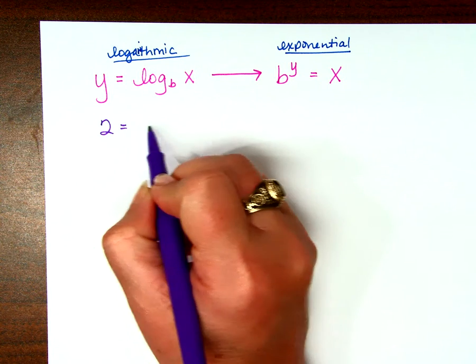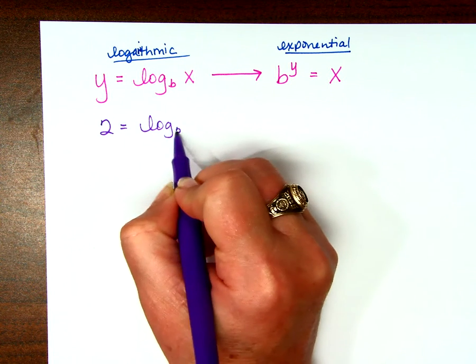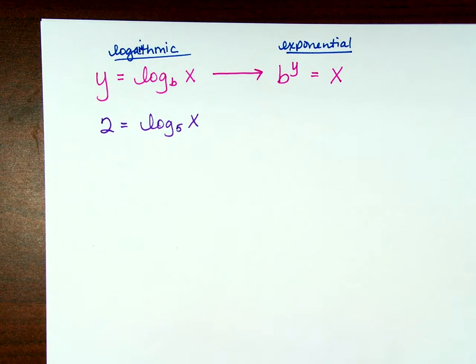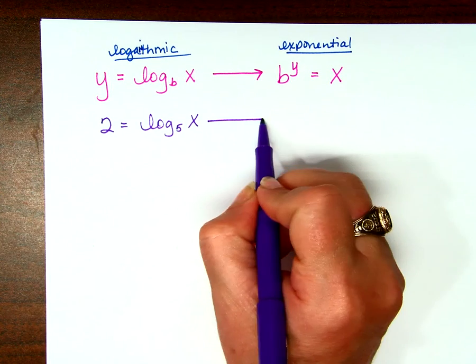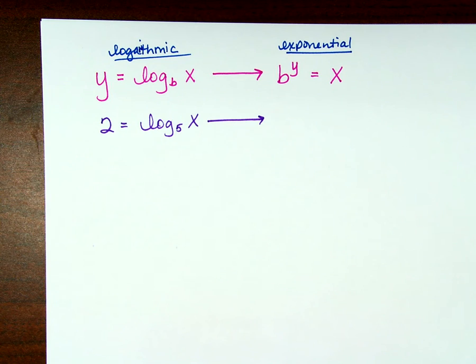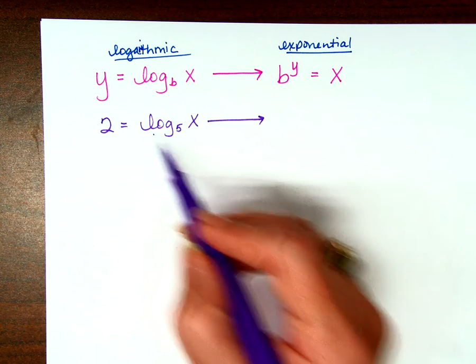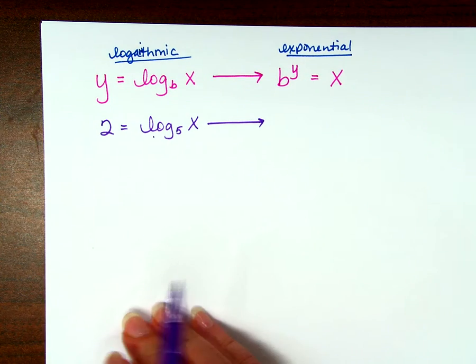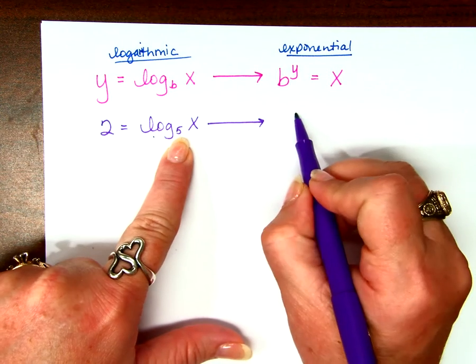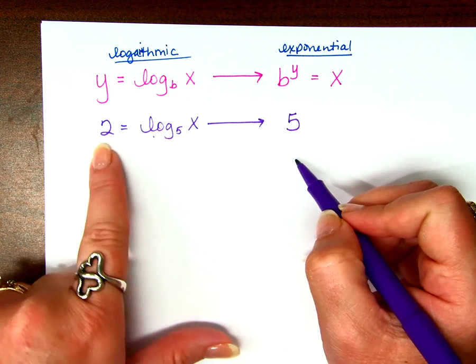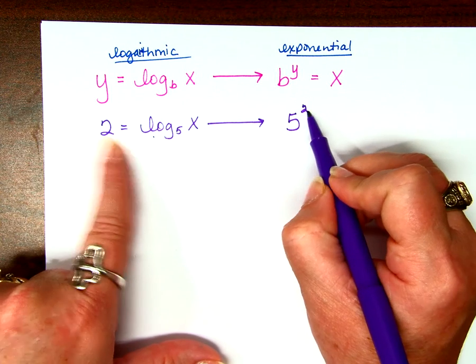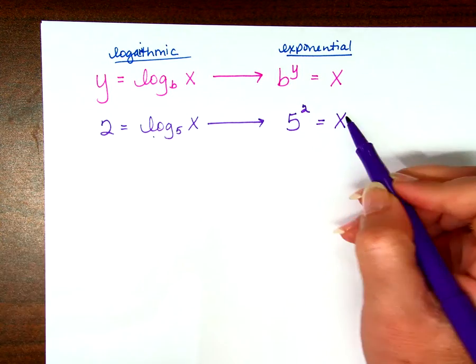2 equals log base 5 of x. Can you write it into exponential form? This is the logarithmic form. The base over here is the base over here. The answer is the exponent and the argument is what's left.